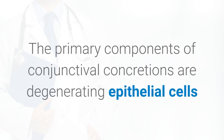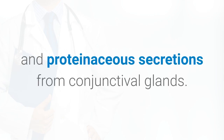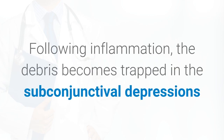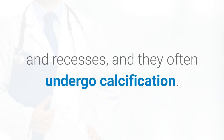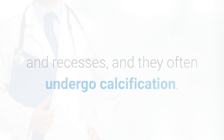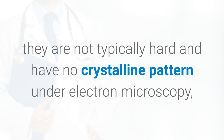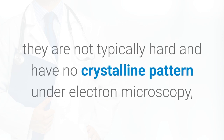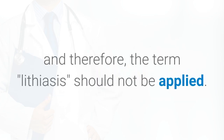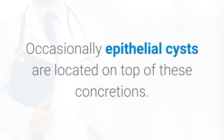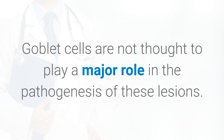The primary components of conjunctival concretions are degenerating epithelial cells and proteinaceous secretions from conjunctival glands. Following inflammation, the debris becomes trapped in the subconjunctival depressions and recesses, and they often undergo calcification. Although the concretions may contain substantial calcification, they are not typically hard and have no crystalline pattern under electron microscopy; therefore, the term lithiasis should not be applied. Occasionally, epithelial cysts are located on top of these concretions, and goblet cells are not thought to play a major role in the pathogenesis of these lesions.